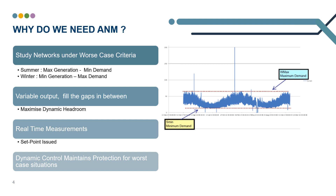An A&M system allows us to issue real time maximum capacities or set points to the generators and, importantly, still provides us the ultimate protection against worst case criteria.